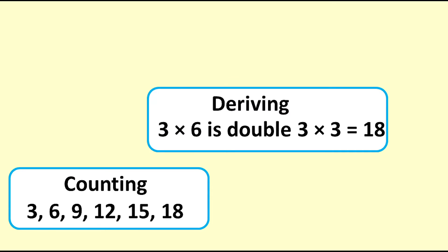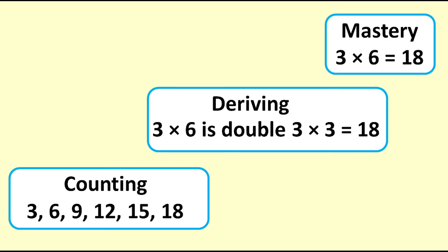Learners go through phases from counting or skip counting, to deriving, to mastery. The deriving phase develops number sense and provides a fallback strategy for when memory fails to produce the required fact.